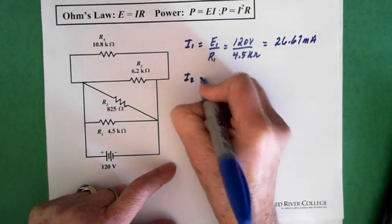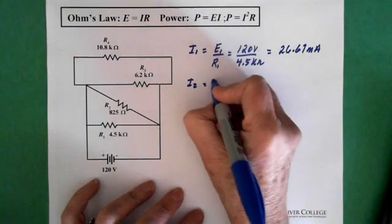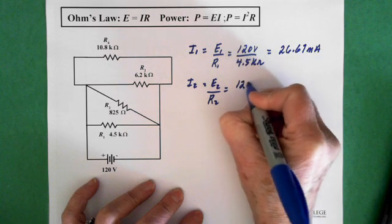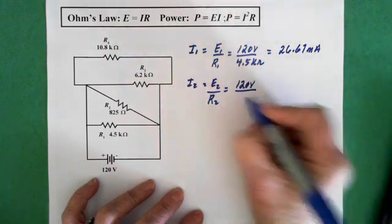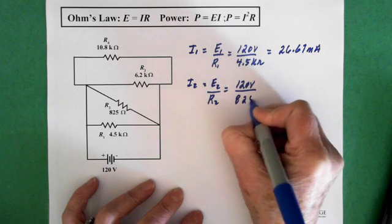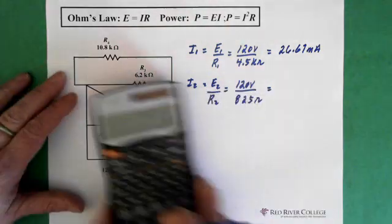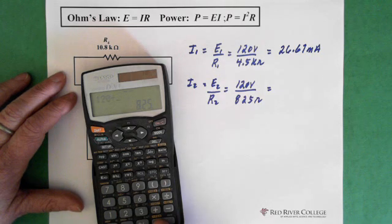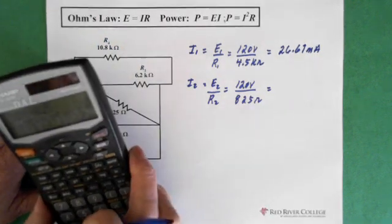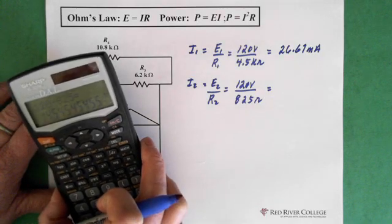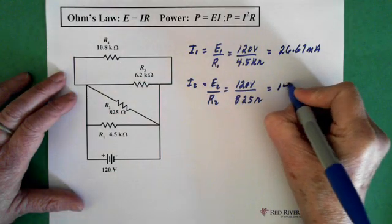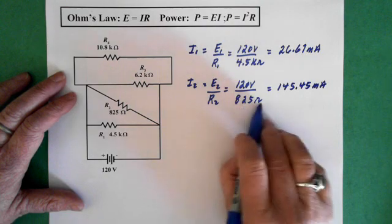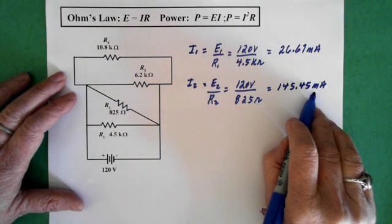I2 equals E2 over R2, which is 120 volts over R2, which is 825 ohms. So we have 120 divided by 825 equals 145.45 milliamps. Notice, smaller resistor, larger current, which is reasonable.